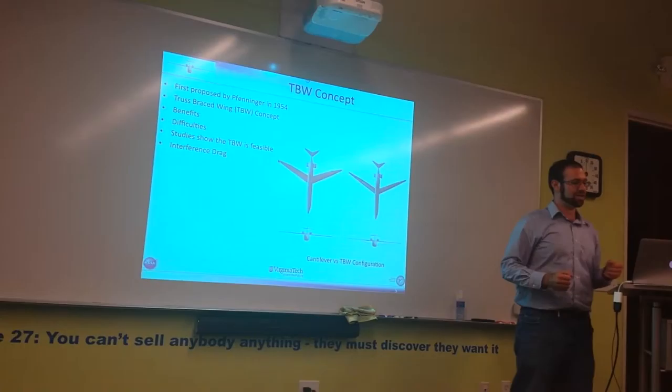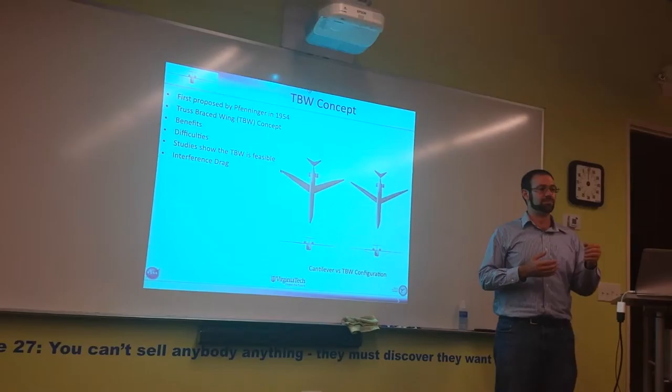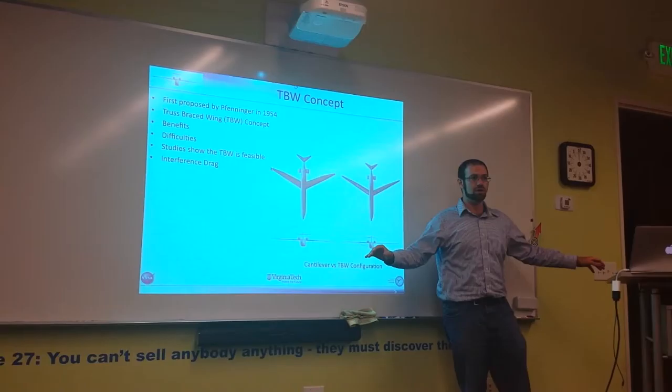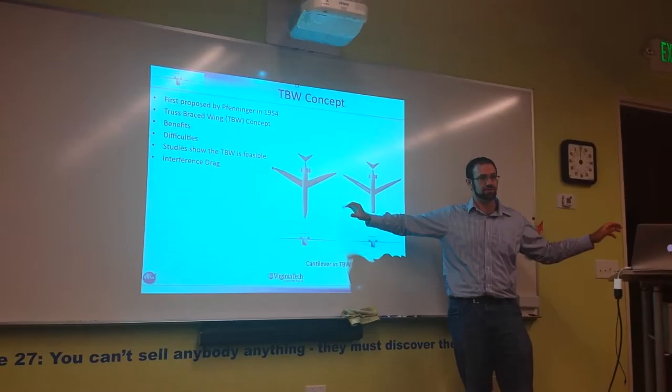So we want to change that. We propose a truss-braced wing design. It was first proposed by Finnegar in 1954. They call it the TBW concept, and it has many benefits. The wings get longer, as you can see here, when you add these struts and trusses. They're longer and they're thinner, which means that they have less weight and hopefully less drag as well. They have a larger aspect ratio. And the bottom line is, you can carry more cargo, hopefully with less fuel.